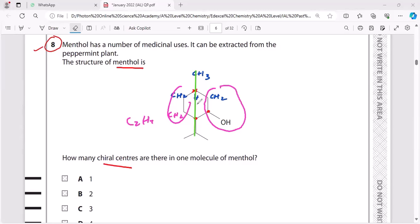So this carbon is also a chiral carbon. There are three chiral carbons.